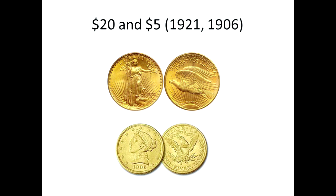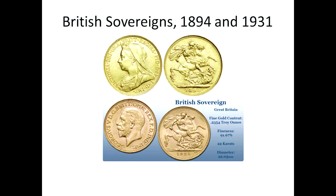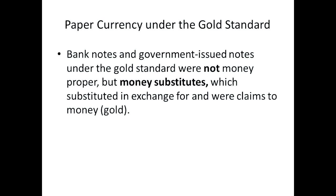Gold was money proper. Bank notes and government-issued notes under the gold standard were not money proper — they were simply money substitutes. They were not money themselves. They were simply titles that were evidence of ownership of a certain quantity of gold, or another way to put it, claims to gold. So for example in 1903, there were a number of national banks set up in the 1860s — a national banking system in which Wall Street banks were dominant — and certain banks were allowed to issue their own notes as well as deposits.